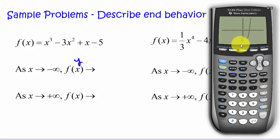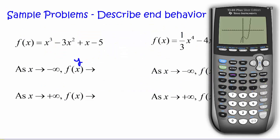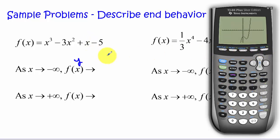The y value here looks like it's heading down to negative infinity. Since this is an odd-degree polynomial with a positive leading coefficient, we know it heads down to negative infinity on the left and positive infinity on the right. We could also check the table, scrolling to larger and larger negative values to confirm the numbers keep getting more and more negative. So: as x approaches negative infinity, y approaches negative infinity; and as x approaches positive infinity, y goes to positive infinity.